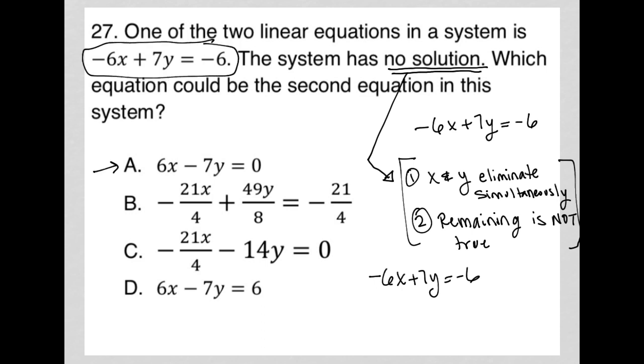So we have negative 6x plus 7y equals negative 6 as the equation provided. My answer choice A would say that the second equation, which I'll just place under the first equation, would be 6x minus 7y equals 0. If I were to combine these two equations together, right, if I just added them together, what would happen?